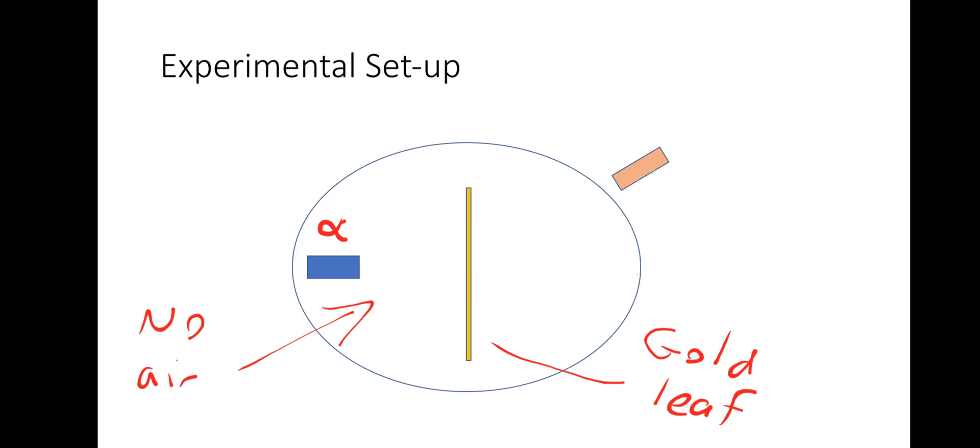So that was the material that the alpha particles would bombard. And then this thing on the right, is like a traveling microscope. And that's used to see the interactions on the outside of the chamber of the alpha particles.